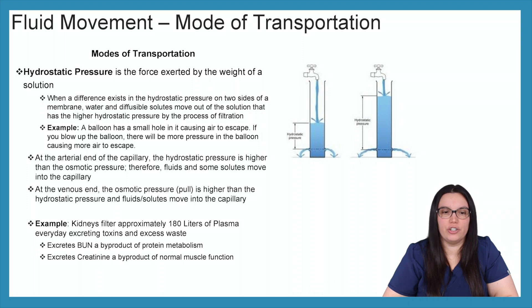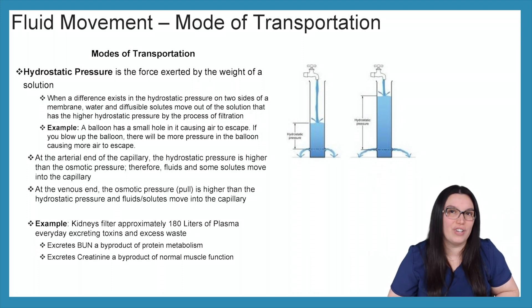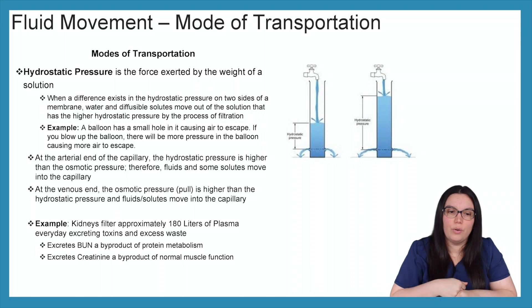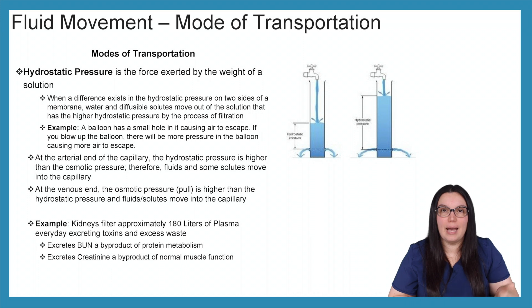Next we have hydrostatic pressure, which is the force that is exerted by the weight of a solution. When a difference exists in the hydrostatic pressure on two sides of a membrane, water and diffusible solutes move out of the solution that has the higher hydrostatic pressure by the process of filtration. An example of this is like a balloon with a small hole that is causing air to escape. If you continue to blow up the balloon there will be more pressure inside causing more air to escape. At the arterial end of the capillary the hydrostatic pressure is higher than the osmotic pressure, therefore fluids and some solutes move into the capillaries. At the venous end the osmotic pressure is higher than the hydrostatic pressure and fluids and solutes also move into the capillary.